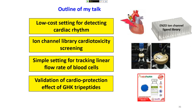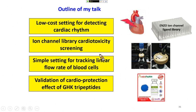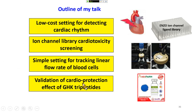In summary: first, we used an algorithm to detect zebrafish cardiac rhythm by image analysis — a low-cost method. Second, we used this method to screen an ion channel chemical library and found six compounds that interfere with heartbeat. Third, we used the ImageJ algorithm again for blood flow detection to assess detailed cardiac and vascular physiology. Finally, we used this method to validate the function of the GHK tripeptide, finding it is effective for cardiac protection in zebrafish.